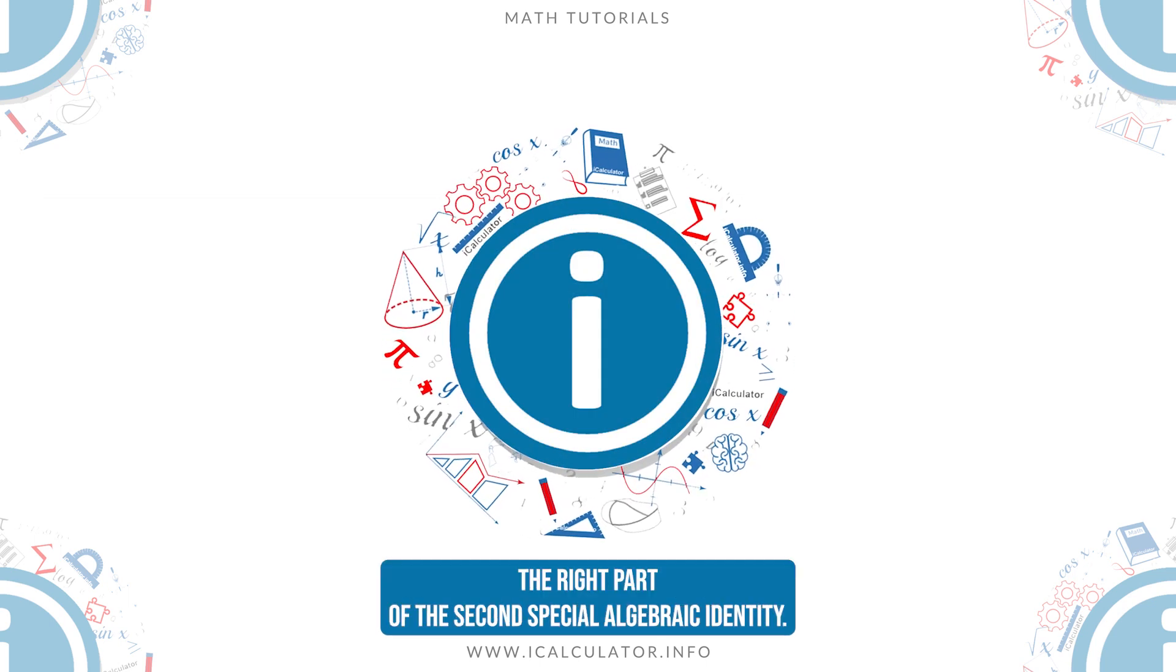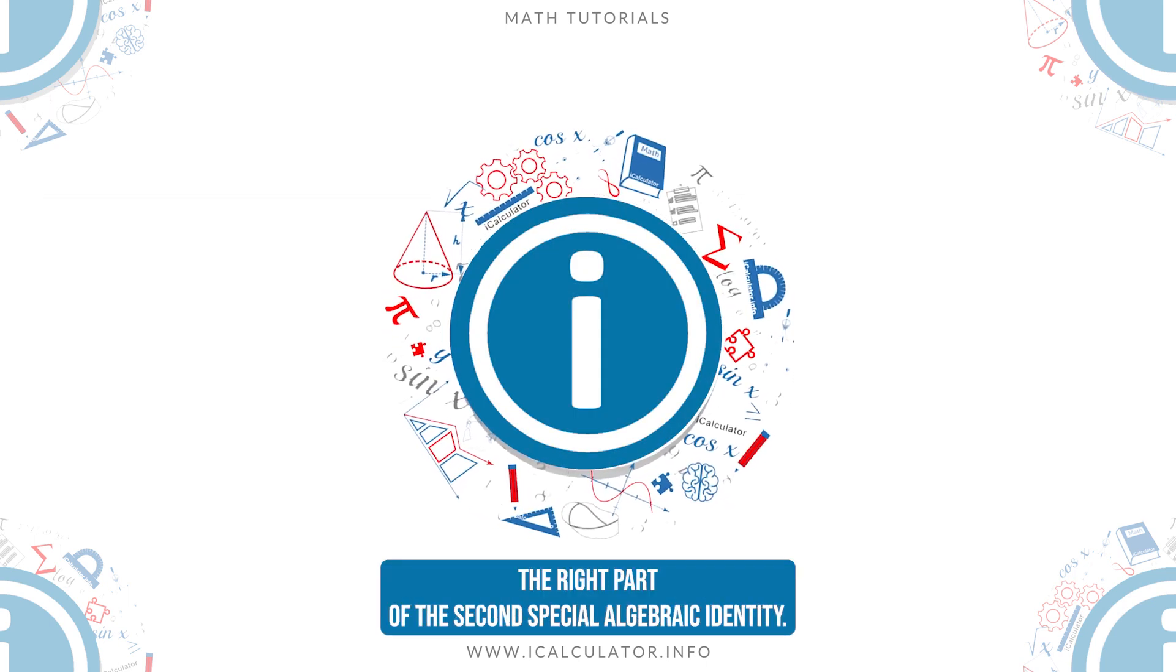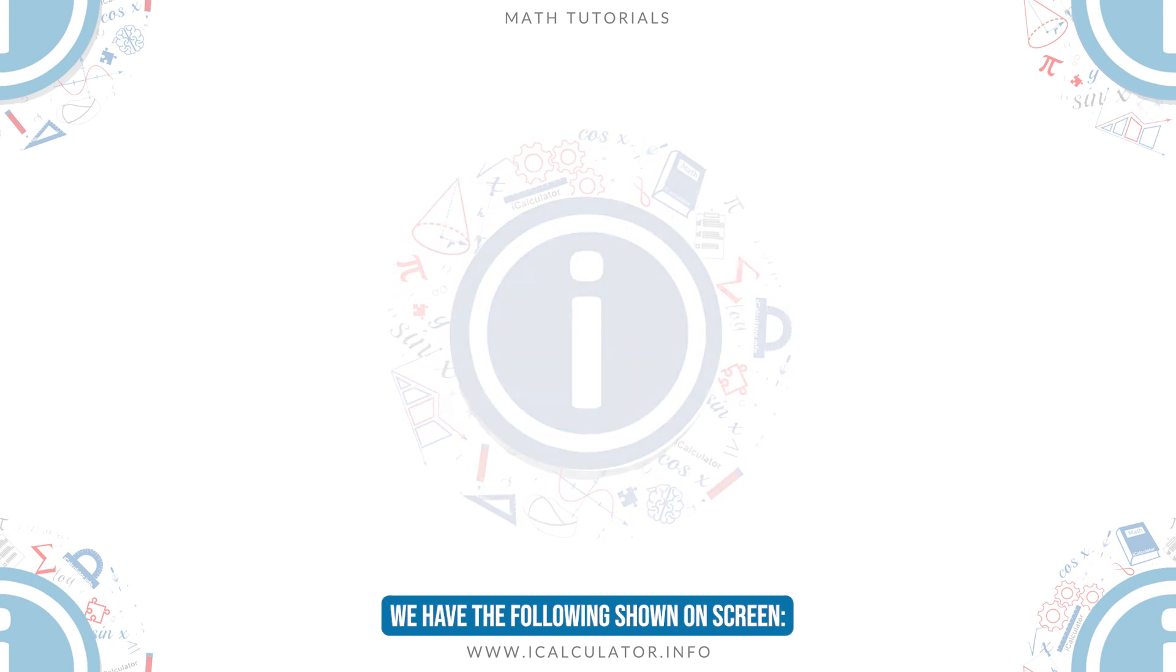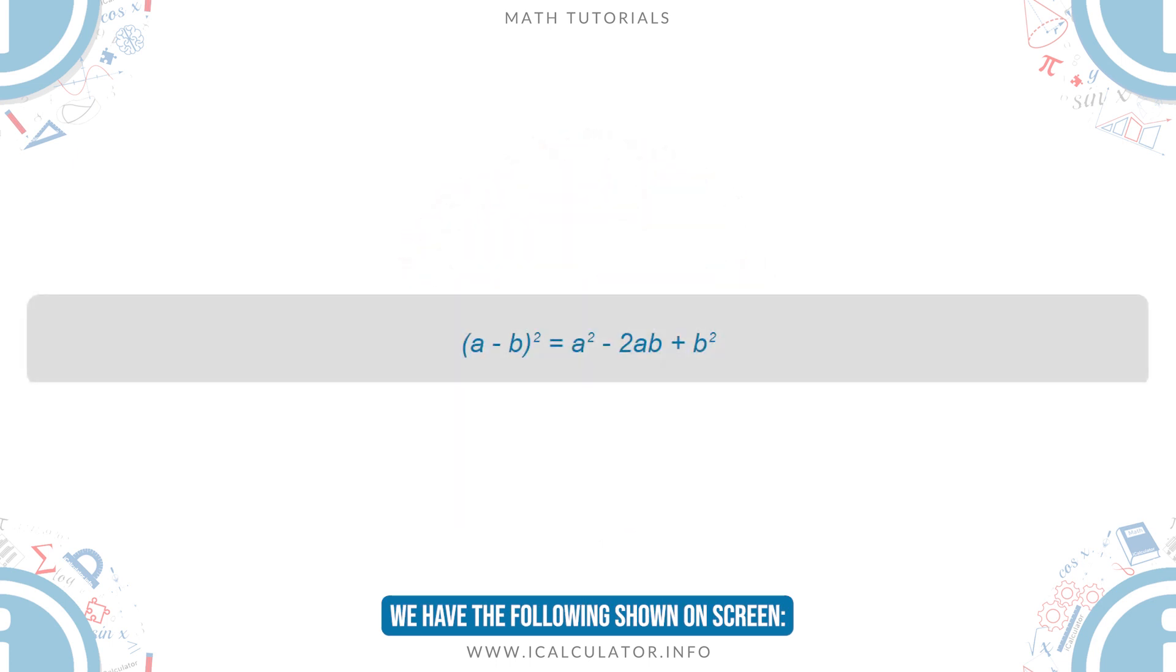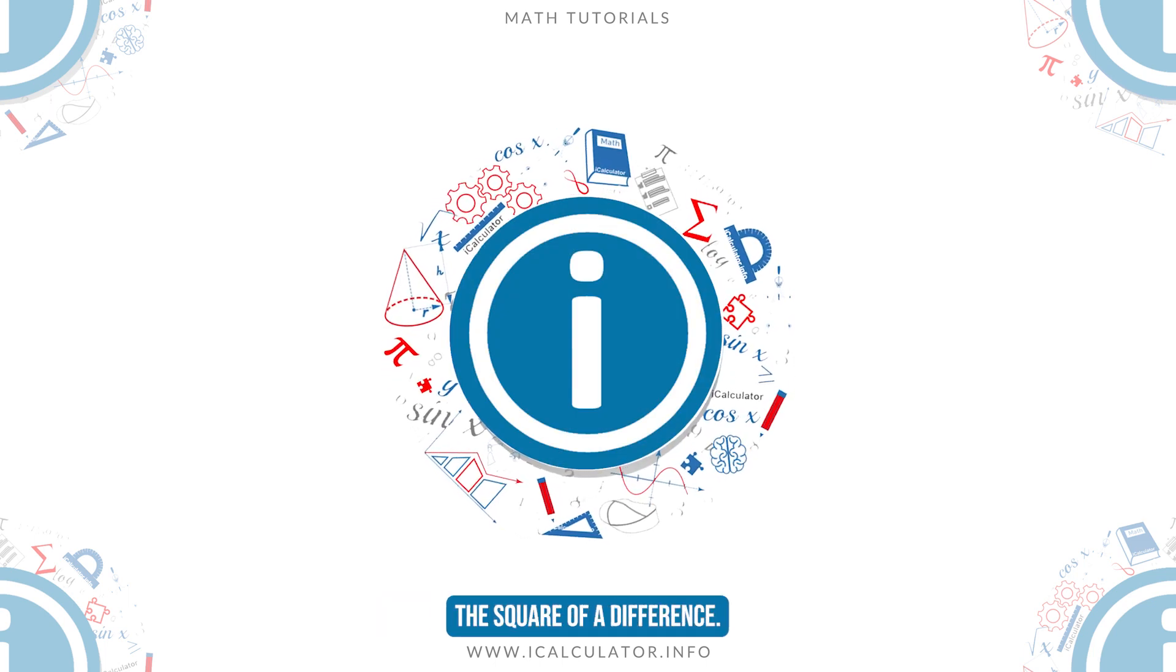The last expression represents the right part of the second special algebraic identity shown on screen, which tells us how to expand the square of a difference.